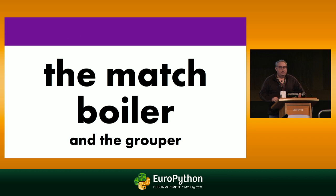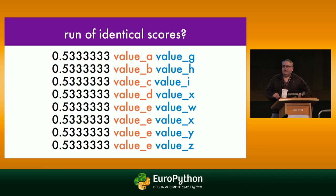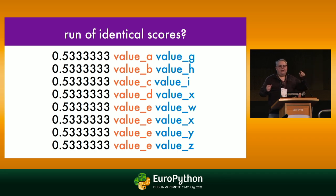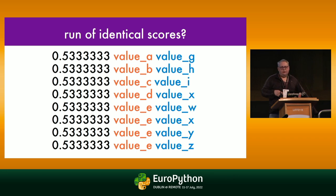The final bit of technology is the match boiler and the grouper. This solves a specific problem: if we have a run of matches with the exact same score, which one should we pick? What I wound up doing was running an experiment where we pick each of the ones with the duplicate score, then recursively examine the rest of the match list and compute the cumulative score. After trying all experiments, we keep the one with the best score.